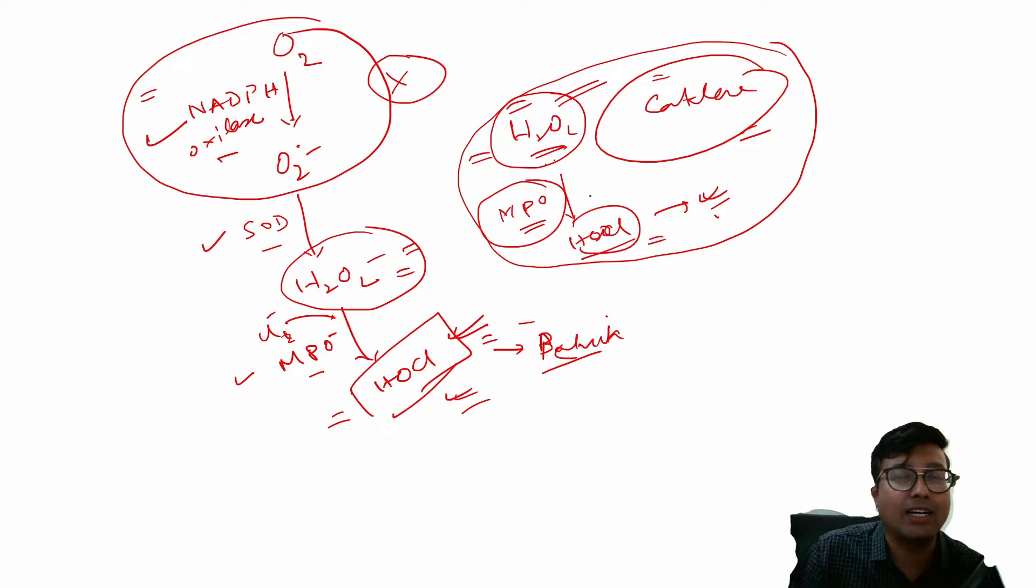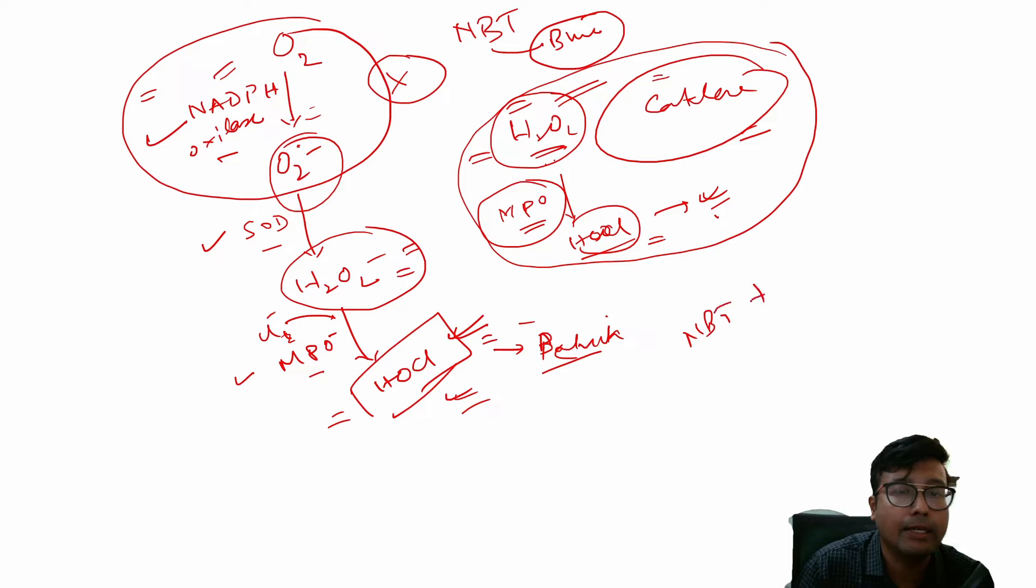This is the key concept why chronic granulomatous disease patients get infected by catalase positive organisms. There is one more important biochemistry that is this reaction is important for converting a chemical that is known as NBT or nitro blue tetrazoleum to blue color using this superoxide radical. However, since NADPH oxidase is deficient, the respiratory burst cannot occur, this NBT cannot be converted to blue. So NBT test is negative, there is no blue color.